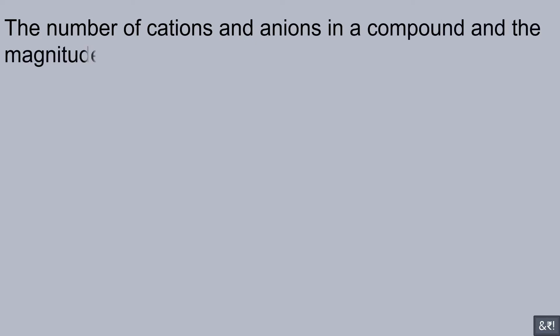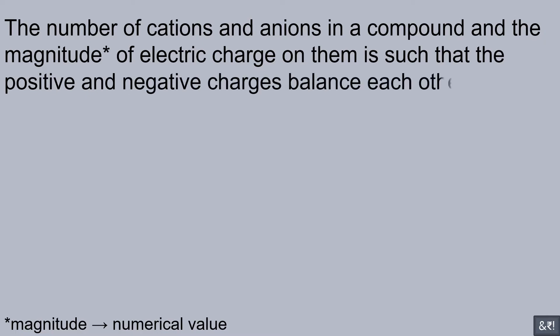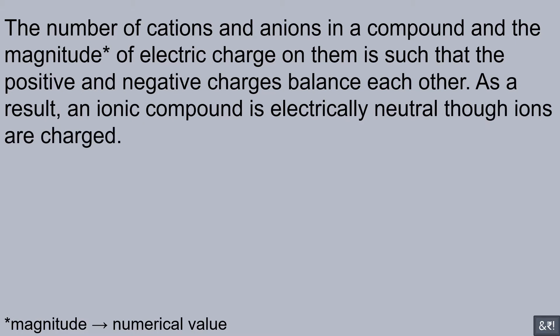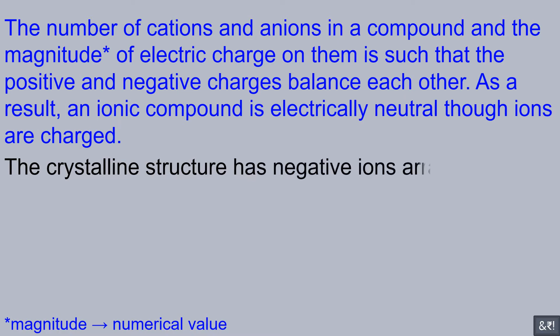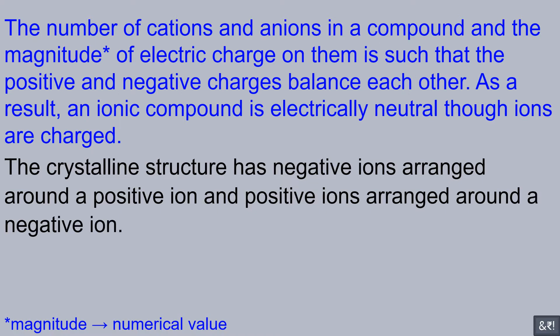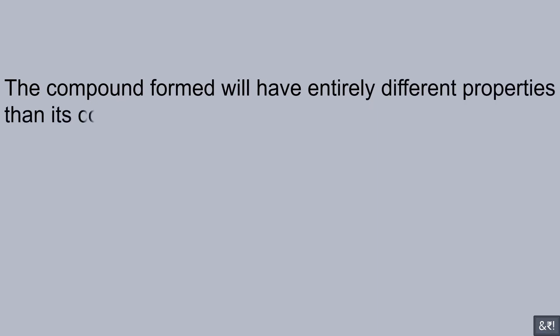Sodium chloride exists as aggregates of oppositely charged ions in a definite geometrical shape. The number of cations and anions in a compound and the magnitude of electric charge on them is such that the positive and negative charges balance each other. As a result, an ionic compound is electrically neutral though ions are charged. The crystalline structure depends on the size of ions and magnitude of electric charge on the ions.